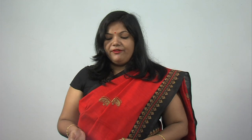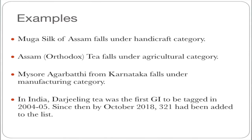Next, what is geographical indication? A geographical indication is a name or sign used on products which corresponds to a specific geographical location or origin. For example, Muga Silk of Assam has a geographical indication. Muga Silk is very important, and it originates from the place of Assam, which has a particular emphasis added to it through the geographical indication.